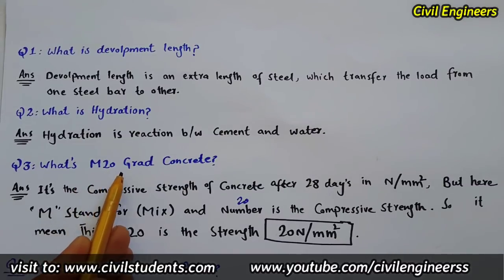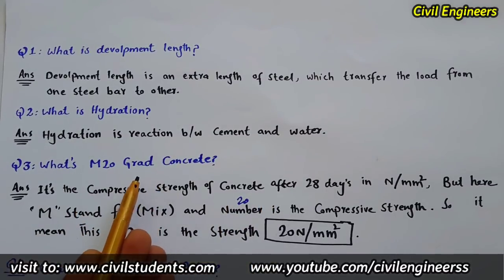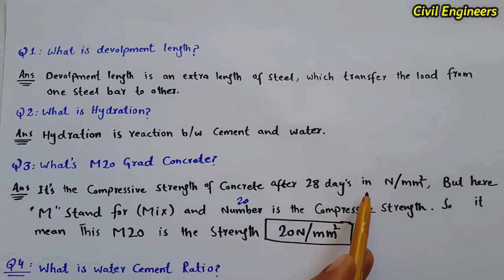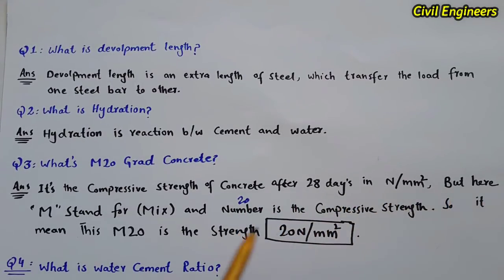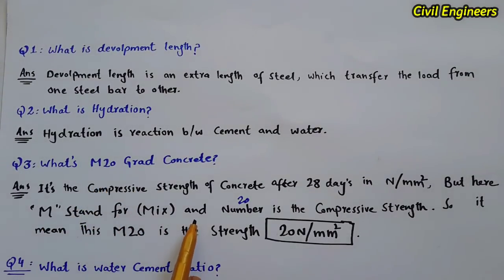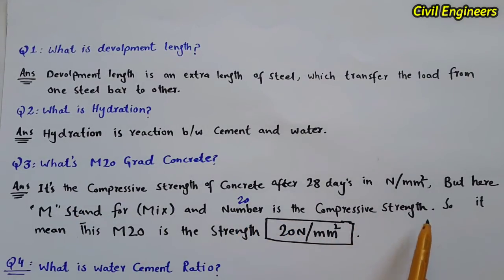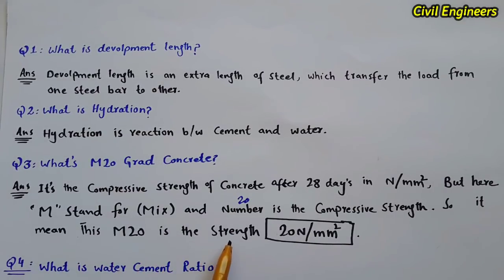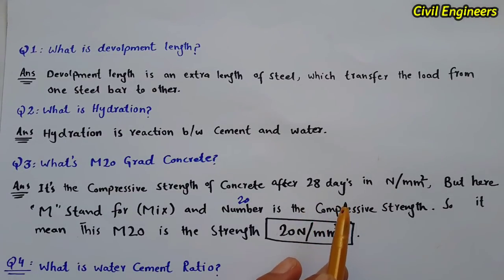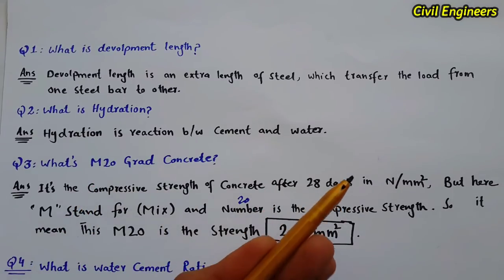Question three: what is M20 grade concrete? M20 represents the compressive strength of concrete. Grade of concrete means the compressive strength after 28 days in Newton per mm². Here, 'M' stands for mix and '20' stands for compressive strength. So M20 means 20 Newton per mm² after 28 days. M20 grade concrete is used for RCC slabs.